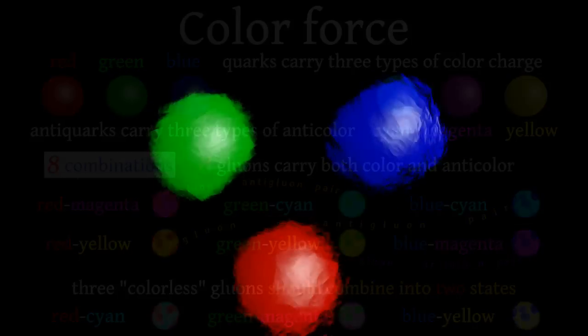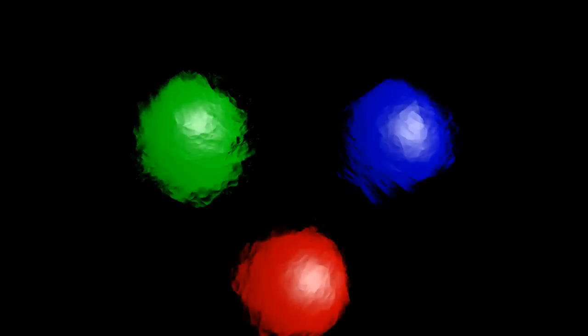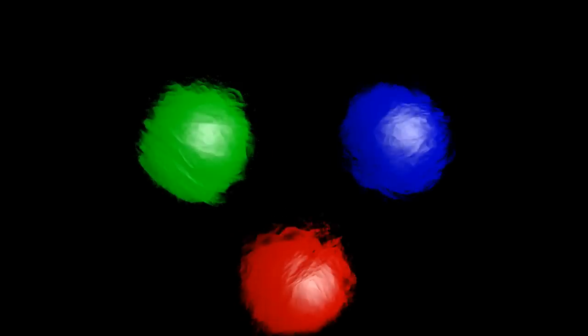How does this work? Let's look inside the proton, which consists of three quarks with different colors: red, green, and blue.